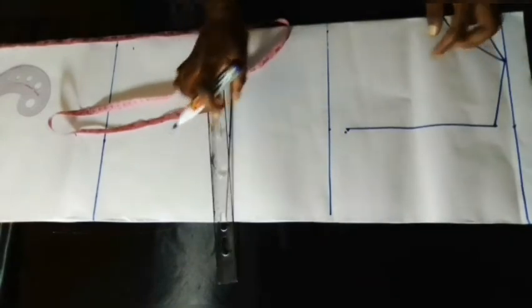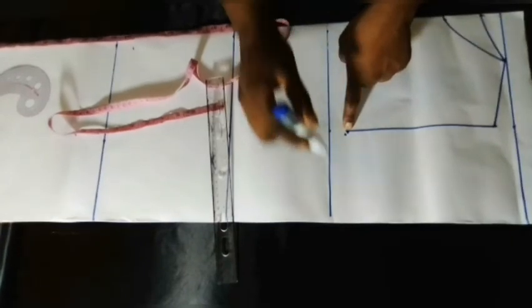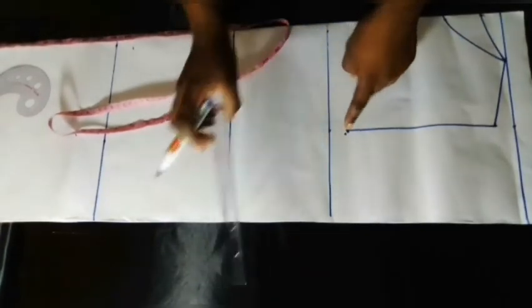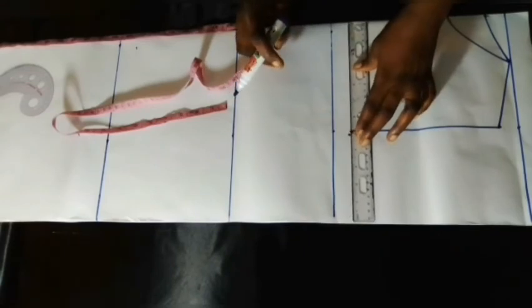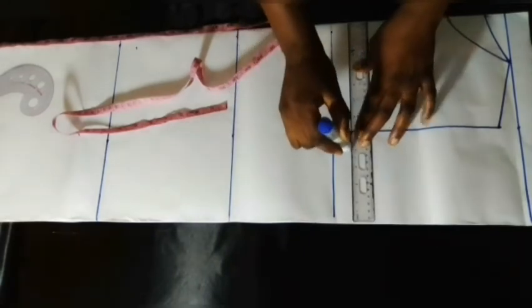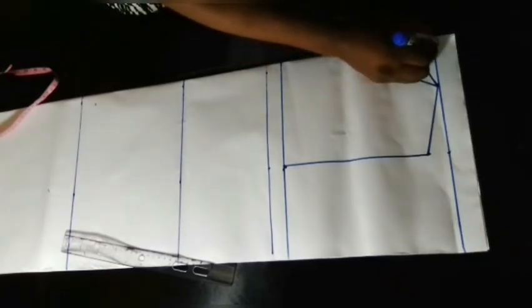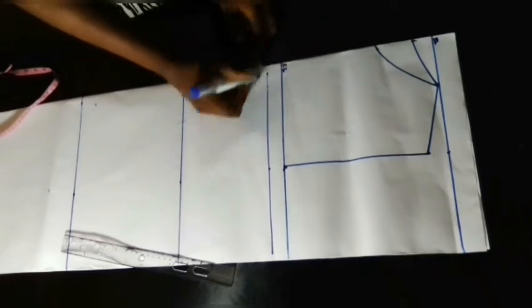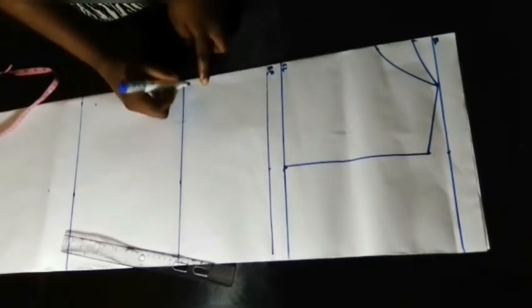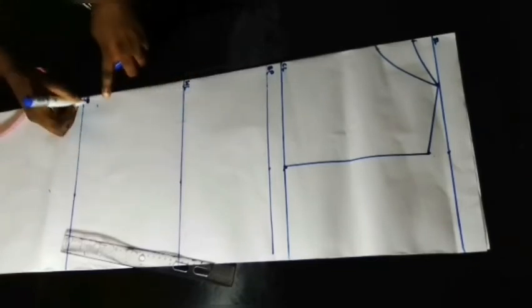After that, I'm going to extend this point with a horizontal line which will serve as my chest line. Now I'm going to label all these lines: this is my shoulder line, this is my chest line, this is my bust point, this is my waistline, and this is my hip line.